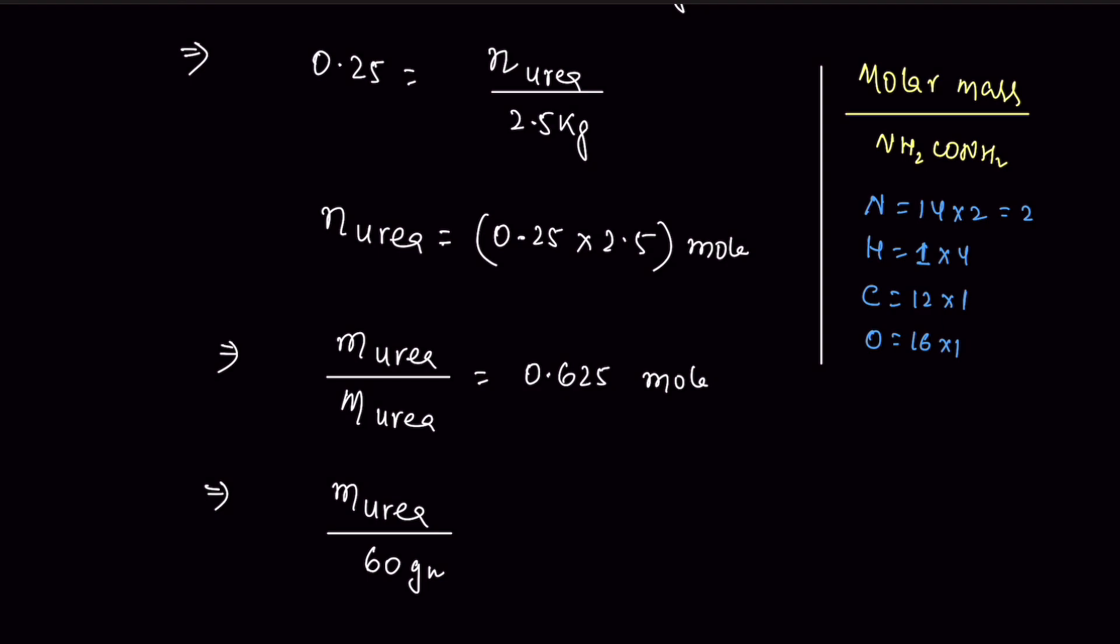So nitrogen is equal to 28, 4, 12, and 16. This is equal to 60.